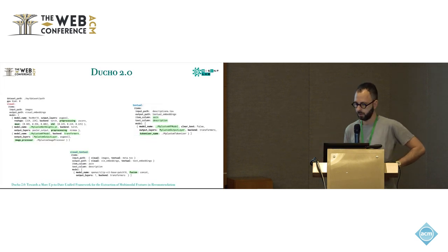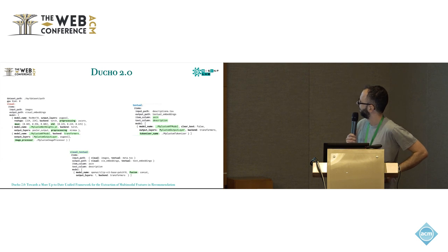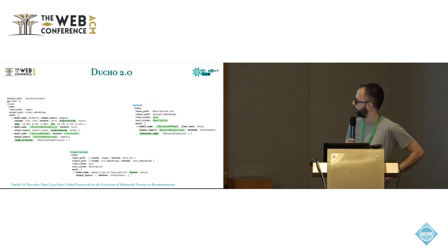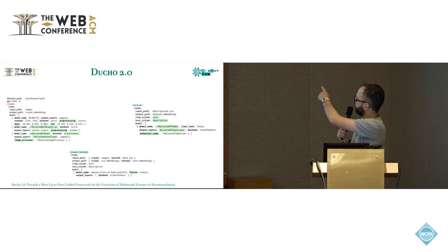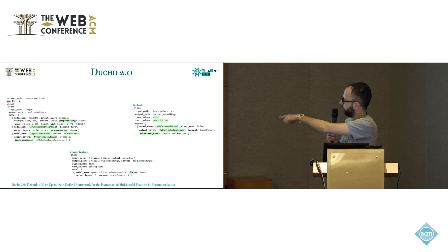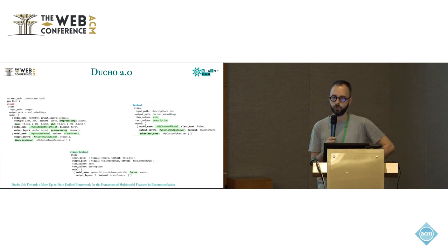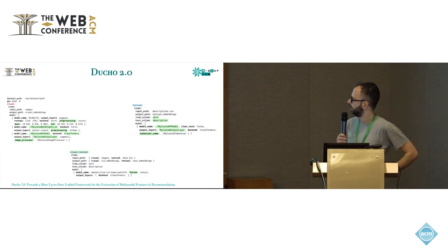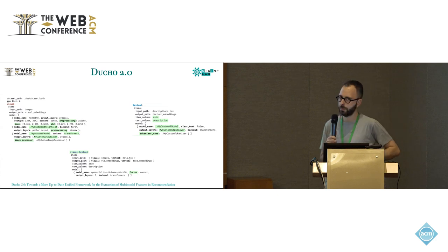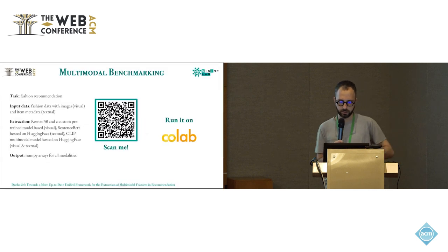Here is a sample configuration file for Duccio 2.0. Highlighted in light green are the differences between Duccio 1.0 and Duccio 2.0. It is possible to set up the input path and models across different modalities — visual, textual, and combined visual-textual with, for example, CLIP. You can set up a custom model trained on your own machine by specifying the architecture and the filename of your weights, or use models from Hugging Face Transformers, and then run your extraction.